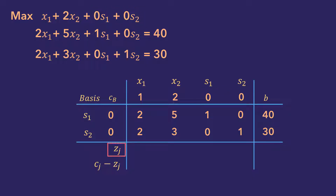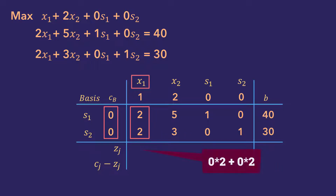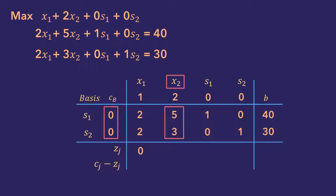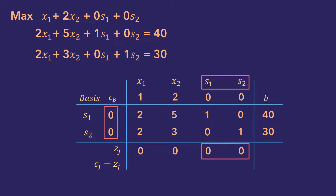Zj is the amount of profit given up by adding 1 unit of each variable into the current solution. It is calculated by multiplying the cb column values by the corresponding variable coefficients and adding them. So for x1, 0 times 2 plus 0 times 2 gives 0. For x2, 0 times 5 plus 0 times 3 gives 0, and so on for other variables. The same applies for the b column: 0 times 40 plus 0 times 30 gives 0.